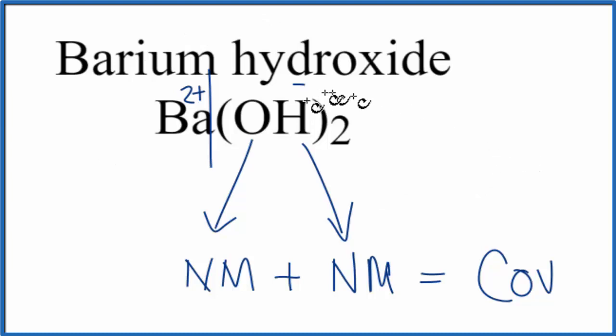This is Dr. B, answering the question whether barium hydroxide is ionic or covalent. It is an ionic compound. Thanks for watching.